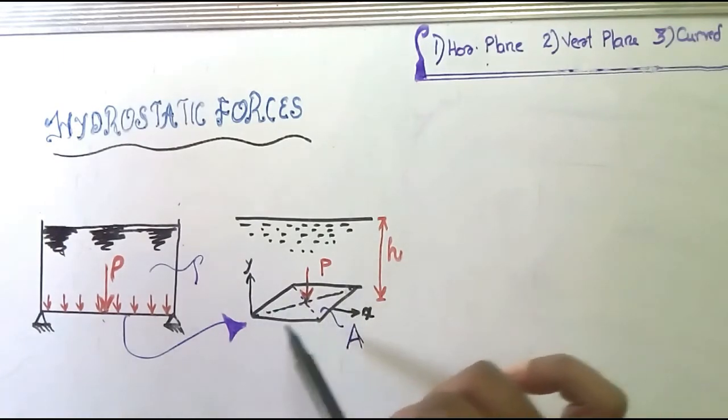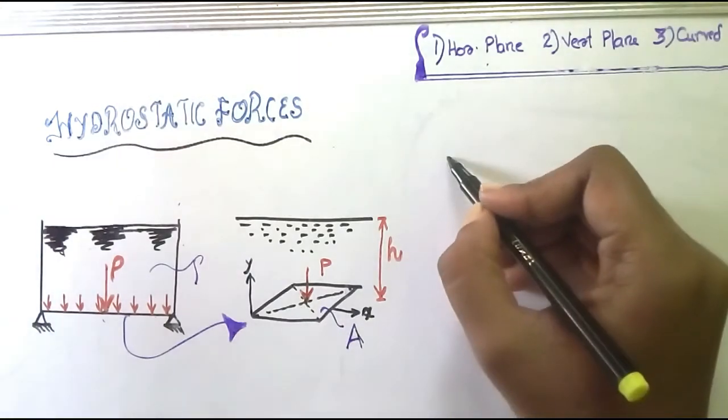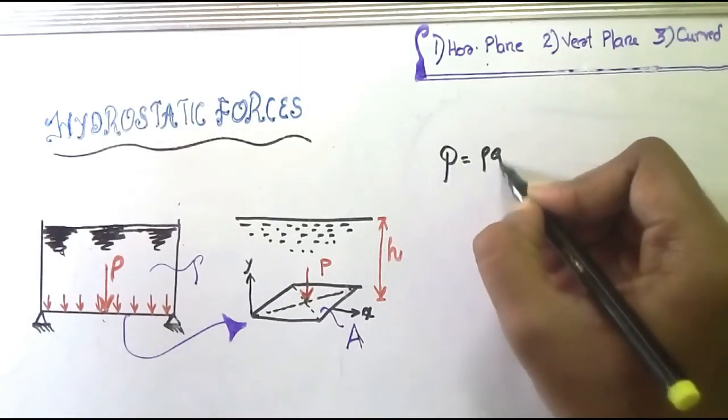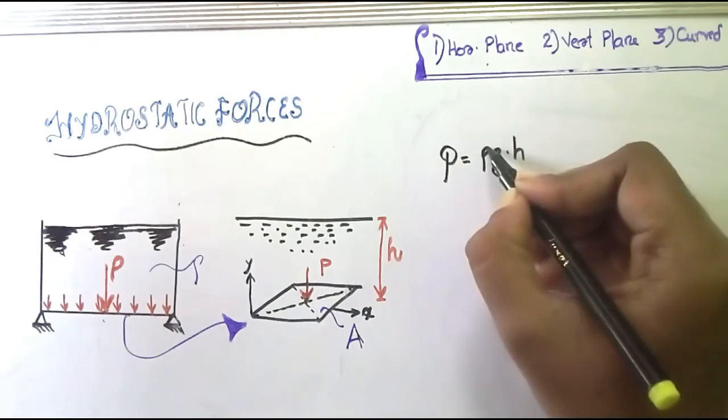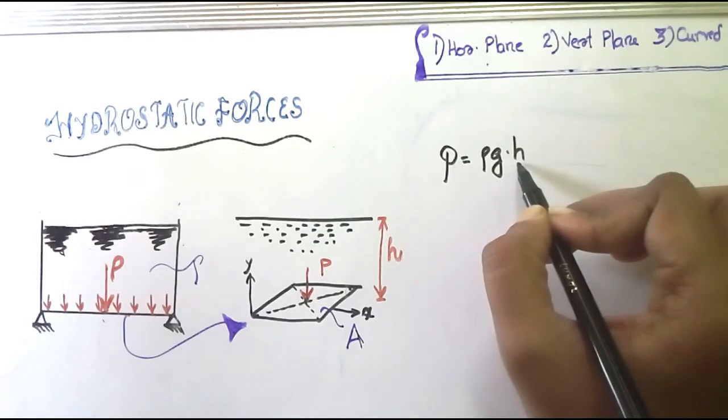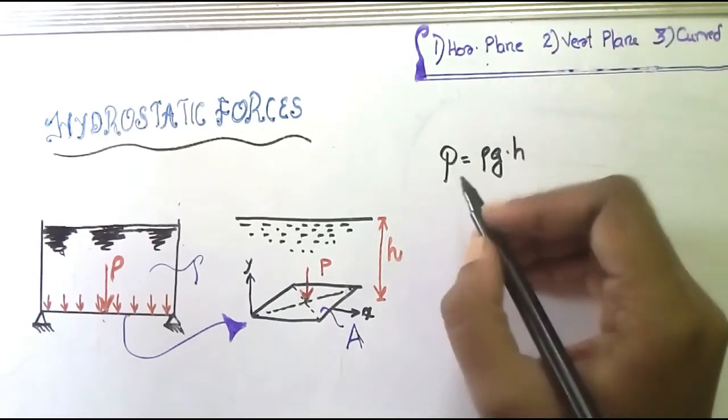All points have the same pressure intensity. The pressure intensity at every point will be equal to ρ times g times h, where ρ is the density of the fluid under consideration, g is acceleration due to gravity, and h is the submergence depth.